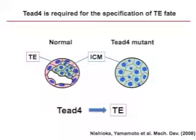Our paper showed that involvement of position-dependent HIPPO signaling provides an important clue for the molecular basis of these models. This work arose from an analysis of the phenotypes of TEF4 mutants. In 2008, we reported that in the absence of TEF4, all cells in the blastocyst become ICM, indicating that TEF4 is required for the specification of TE fate.